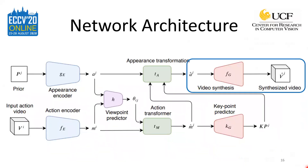The final step of the network is to synthesize the target video based on the transformed appearance features and action key points. The video synthesis network consists of 3D convolutional blocks followed by upsampling via trilinear interpolation, which produces a video with resolution 16 x 112 x 112 x 3, the same resolution as the original input video. A final detail about the architecture is that we use hierarchical feature transformation, meaning the initial appearance and action encodings are extracted at three different resolutions and all are passed through the transformation modules. During video synthesis, the transformed features of all sizes are used, which allows the network to extract and transform the action and appearance features in more detail, thus improving the final result.